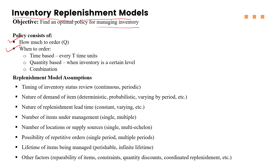When we are talking about when to order, there are two main components: whether we are thinking with respect to a time-based order, a quantity-based order, or a combination. With a time-based model, we order after every specific time period — like every month, every year, or every quarter. With a quantity-based model, we monitor the inventory level, and when it reaches a certain level, it's time to reorder. So when to order depends on whether we are thinking with respect to periodic review systems or continuous-based inventory models.